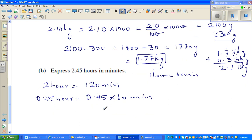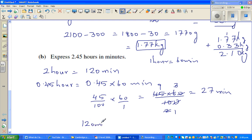So this is 45 out of 100 times 60 over 1. So this is 45 times 60 over 100. So I'm dividing both by 5. So 5 goes in 45 nine times, 5 goes in 10 two times. And 2 goes in 2 once, and 2 goes in 6 three times. So this is 27 minutes. So the final answer would be 120 minutes plus 27 minutes, which is 147 minutes. See you in the next video.